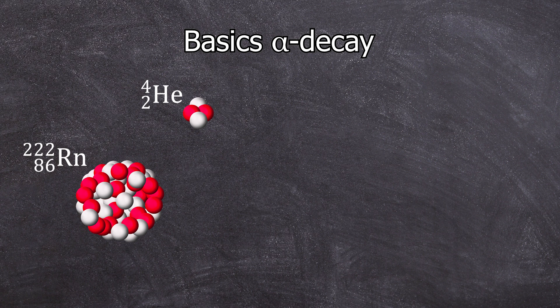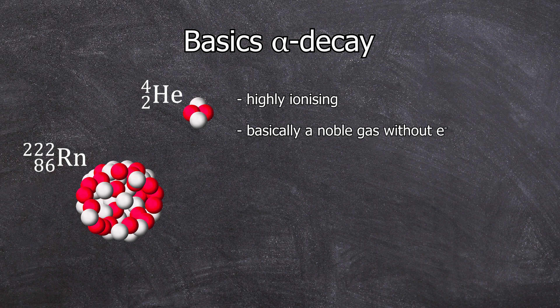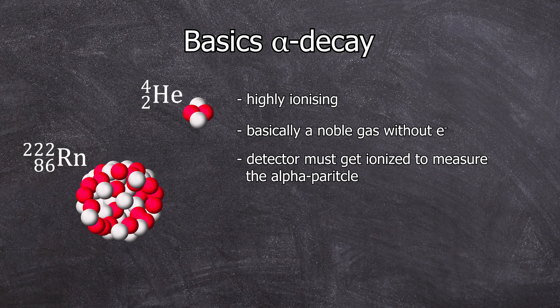The emitted alpha particle is highly ionizing. Remember, noble gases are not quite a fan of releasing electrons, and when this alpha particle is released, it has no electron, making it highly ionizing. This ionization effect is utilized by the detector to measure the radiation.